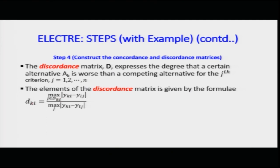d_kl — comparing the k-th and l-th alternatives based on criteria — the j value changes from 1 to n. You find the maximum distance or maximum value for all the sets being compared, then divide by the maximum of the whole combined population. This ratio gives you the values of the discordant set or matrix elements.